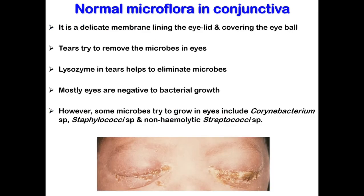At birth and throughout human life, a small number of bacteria are found in the conjunctiva of the eye. The conjunctiva is a delicate membrane lining the eyelid and covering the eyeball. The eye has several defences to protect it against infection, including lysozyme in tears, which helps to eliminate microbes, and also tears which physically remove microbes from the eyes.